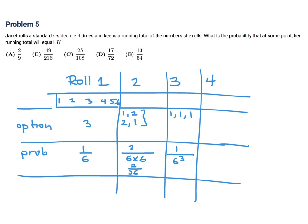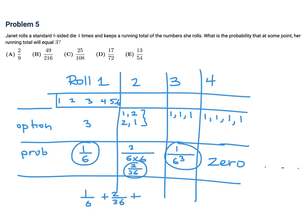On the fourth roll, getting a running total of 3 is impossible, because even if you had the bare minimum on the first 3 rolls, you'd already have 3, and the bare minimum on the fourth would be 1, making the running total at least 4. So the probability is 0 for roll 4 and everything after. Adding everything up: 1 over 6 plus 2 over 36 plus 1 over 216. Getting a common denominator of 216, that's 36 plus 12 plus 1, which is 49 over 216. And that is B.